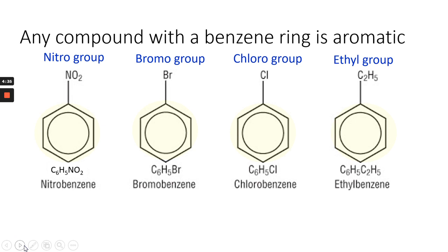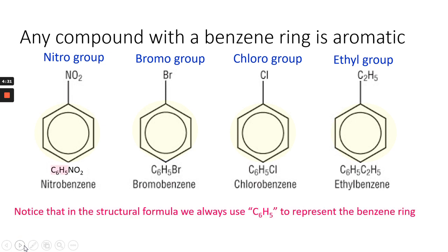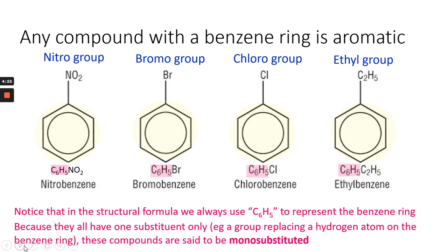Nitrobenzene means you have a nitro group substituted for one of the hydrogens. If we look at the structural formula, we always use C6H5 to represent the benzene ring, as you can see from the pink highlighted parts. Now because these all have one substituent only, they're called monosubstituted.